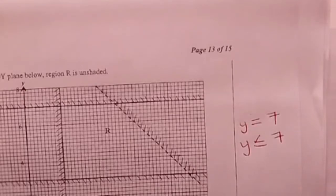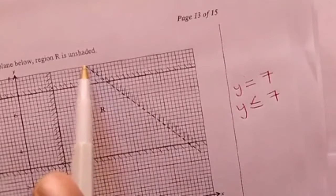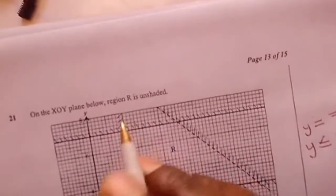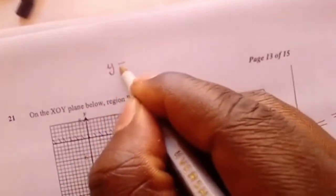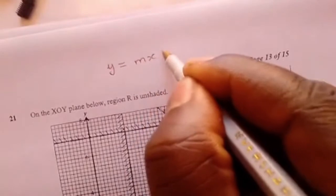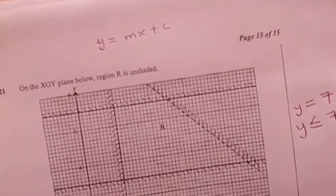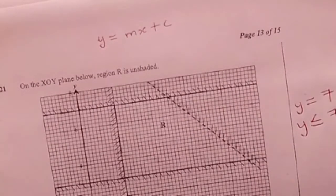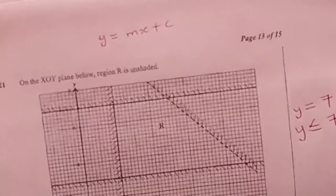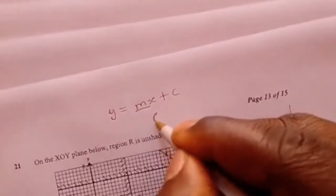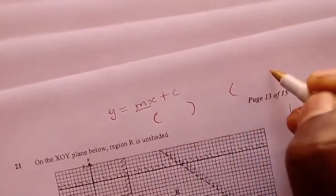We move on to the fourth inequality. The fourth inequality is going to be determined by this dotted line which is a slope. For lines with a slope, we make use of the equation form of the straight line which is y equals mx plus c. C is the y-intercept or the value of y when x equals 0, and m denotes the gradient of the line. To find m, you have to identify two points which are lying on that line.